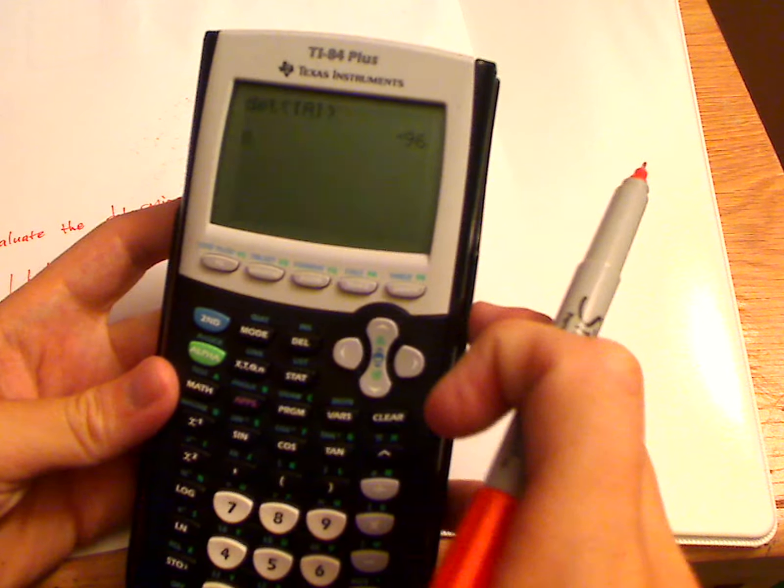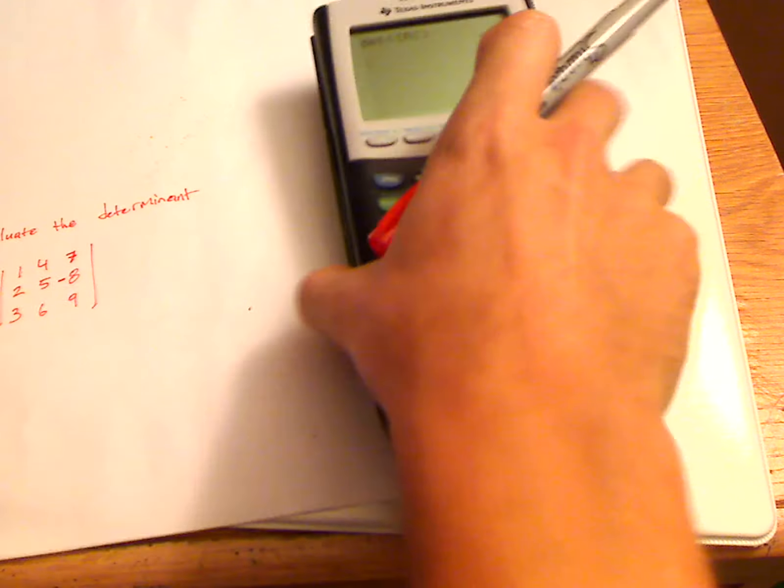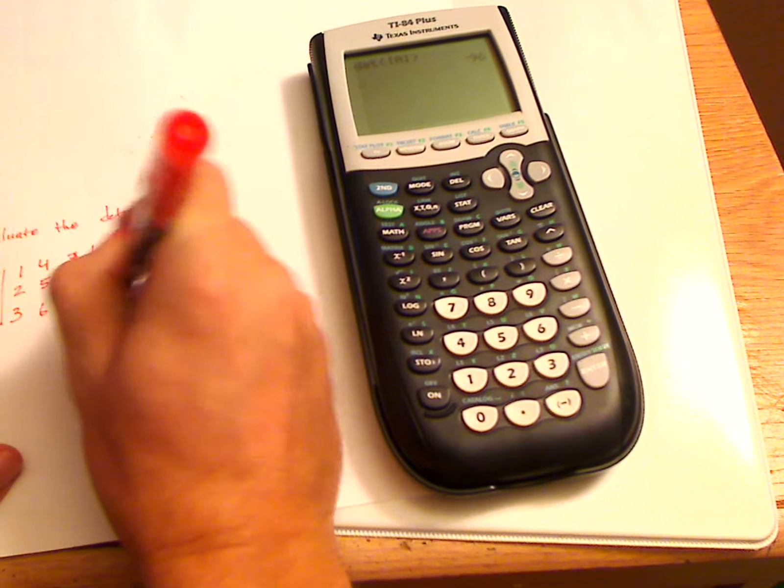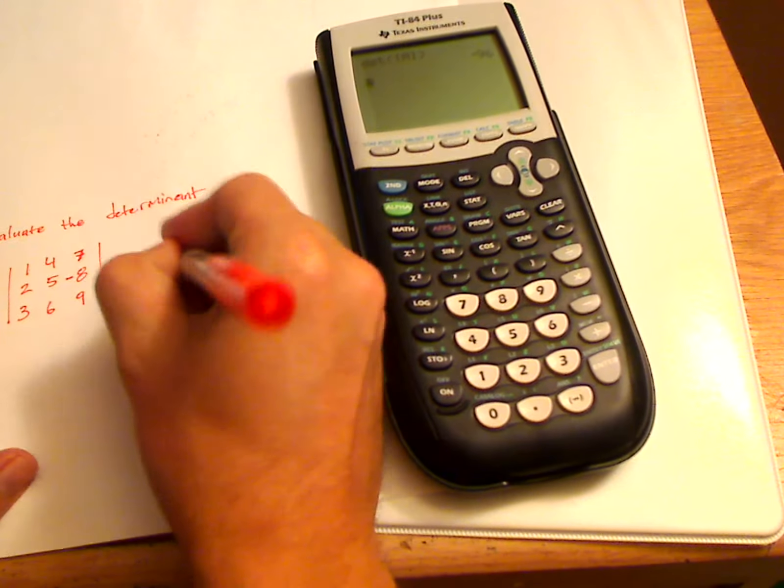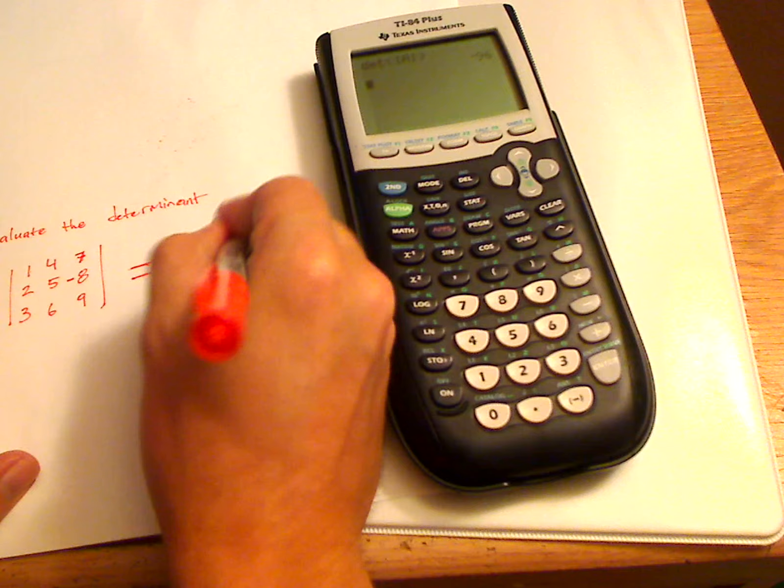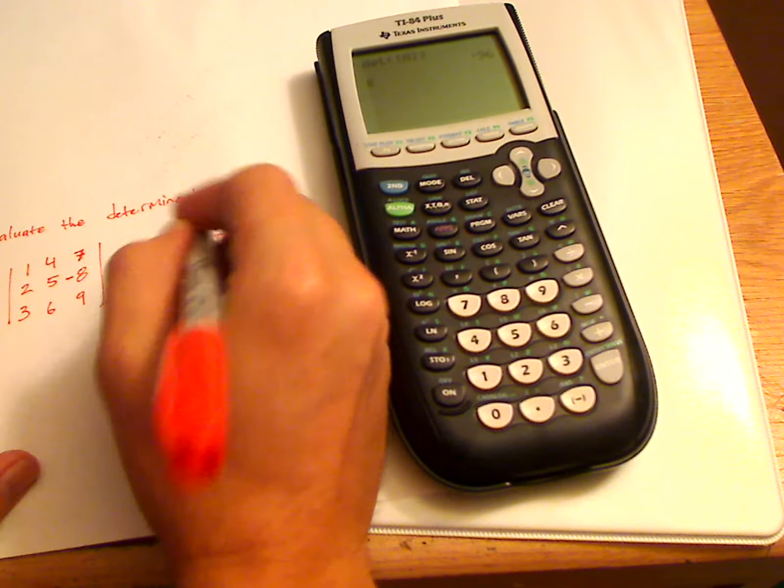So the determinant of the matrix is equal to negative 96. And that is far easier to do this way.